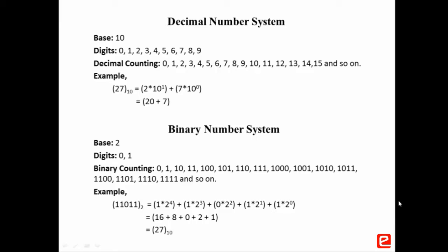Each digit in binary is referred to as a bit. Considering the same example, the rightmost bit is the least significant bit, called LSB, and the leftmost bit is the most significant bit, called MSB.